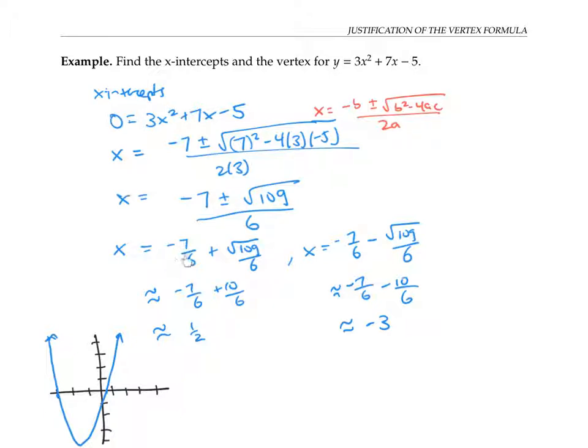Since the x-intercepts are negative 7 over 6 plus and minus the square root of 109 over 6, the number halfway in between those is going to be exactly negative 7 over 6. Right? Because on the one hand, I have negative 7 over 6 plus something, and on the other hand, I have negative 7 over 6 minus that same thing. So negative 7 over 6 will be exactly in the middle. So my x coordinate of my vertex will be at negative 7 over 6.